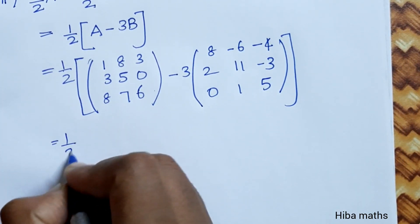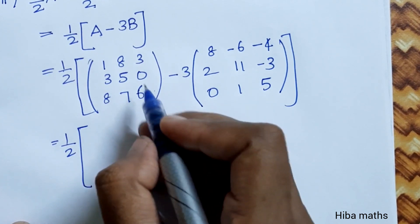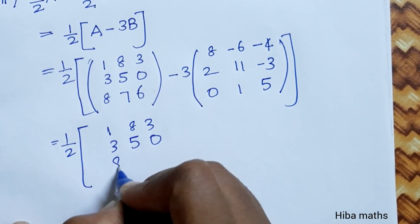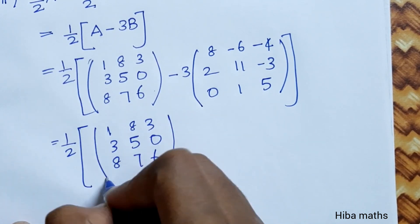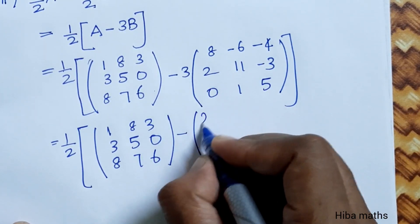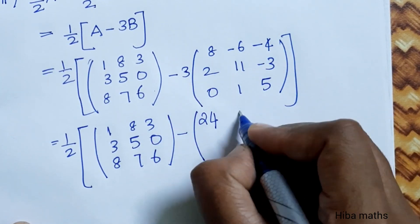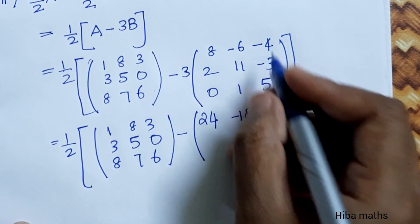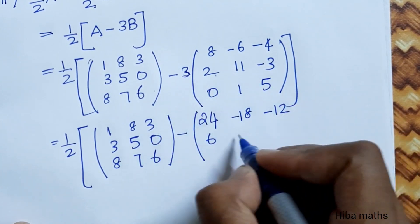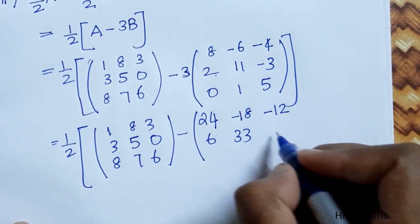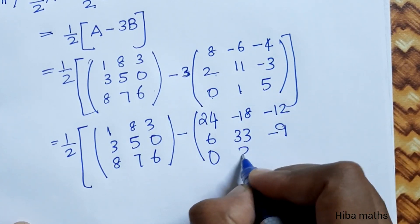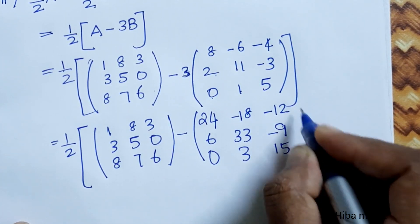Now multiplying by 1/2: the first matrix. Then minus 3 inside multiplied: 3 times 8 is 24, 3 times 6 is 18 so minus 18, 3 times 4 is 12 so minus 12, 3 times 2 is 6, 3 times 11 is 33, 3 times 3 is 9 so minus 9, 3 times 0 is 0, 3 times 1 is 3, 3 times 5 is 15.